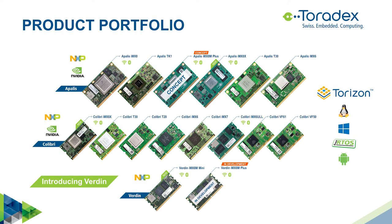There is also the Colibri family, which is the oldest and most proven in the field by thousands of customers. This is where you find the lower-end SoCs with very low power consumption and a good cost-to-performance ratio. We have also introduced Verdin at the beginning of this year — a family of computer modules providing future-oriented hardware interfaces such as MIPI DSI for display, MIPI CSI-2 for camera, 1.8V I/O, and a wide-range power supply supporting a single-cell battery.